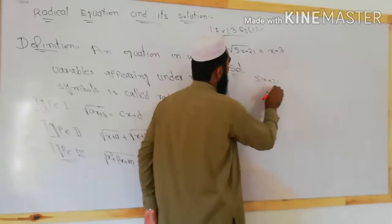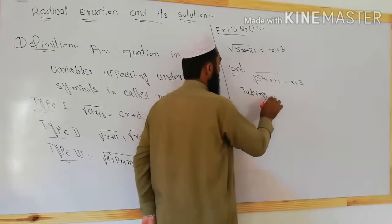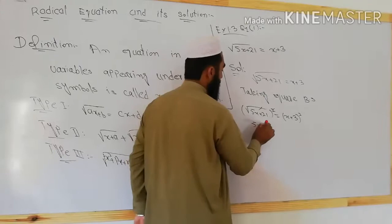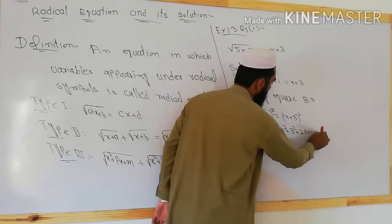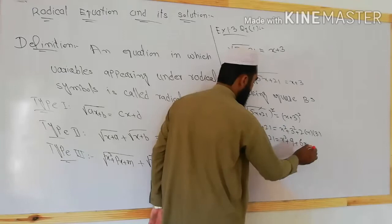Example of the first type: √(5x + 21) = x + 3. To cancel the square root, we take the square of both sides. Taking square both sides: 5x + 21 = (x + 3)². Using the formula (a + b)² = a² + 2ab + b², this expands to: 5x + 21 = x² + 6x + 9.